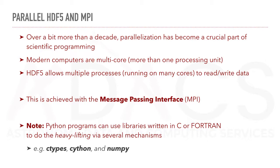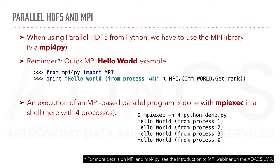This is achieved by the Message Passing Interface, or MPI. Note that Python programs can use libraries written in C or Fortran to do the heavy lifting via several mechanisms, for example using Ctypes, Cython, and NumPy. When using parallel HDF5 for Python, we have to use the MPI library via MPI for Py.